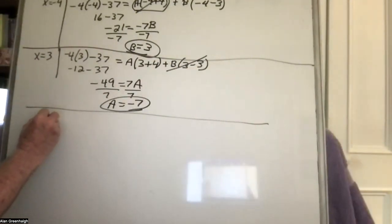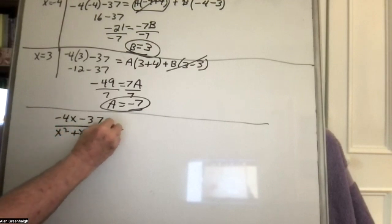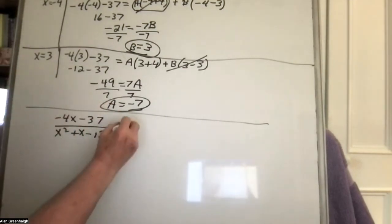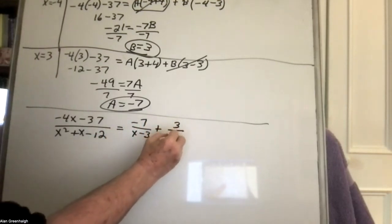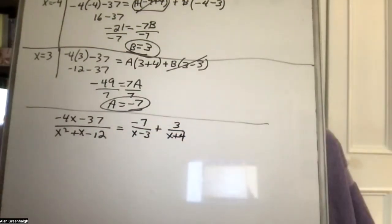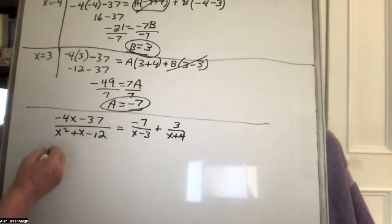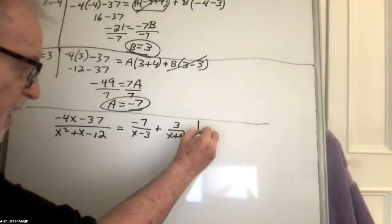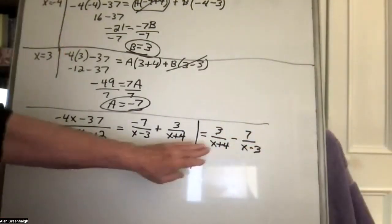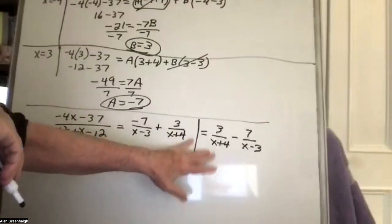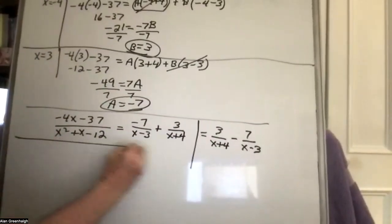The answer is negative 4x minus 37 divided by x squared plus x minus 12, equal to negative 7 over x minus 3 plus 3 over x plus 4. Some people wrote it with the 3 over x plus 4 first, making the negative 7 times x minus 3 — that's the more professional mathematical way. Either one received full credit. This type of problem is usually on the final exam.